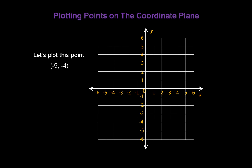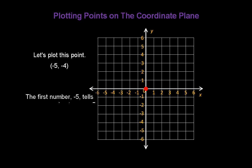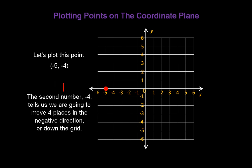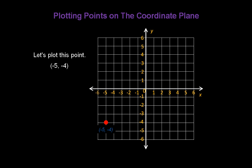Let's plot the point (-5, -4). We always start at the origin, (0, 0). The first number, -5, tells us we are going to move 5 places in the negative direction, or to the left. The second number, -4, tells us we're going to move 4 places in the negative direction, or down the y-axis. And that's our point, (-5, -4).